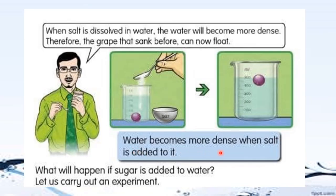Water becomes more dense when salt is added to it. When salt is dissolved in water, the water will become more dense. Therefore, the grape that sank before can now float. What will happen if sugar is added to water? Will the grape float if sugar is added to water? You may carry out this activity at home to find the answer.